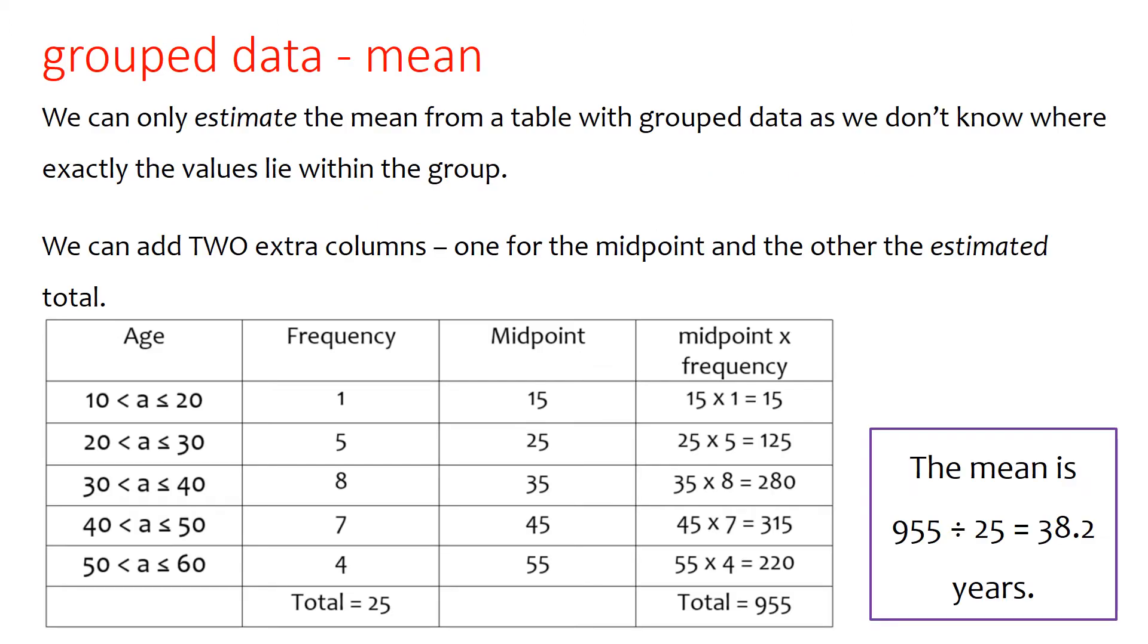So to work out the mean in this case, we can only do an estimate because we don't know where within those brackets those people fall. So to do our estimate, what we will do initially is add in an extra column for midpoint. So we'll work out the midpoint of each of these age brackets. So for 10 to 20, the midpoint will be 15. For 20 to 30, it'll be 25.